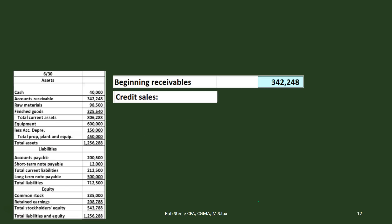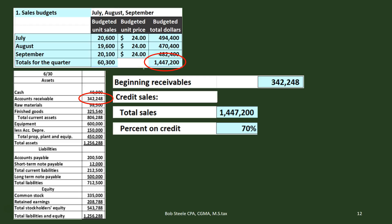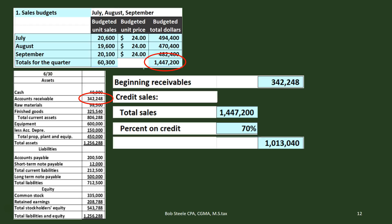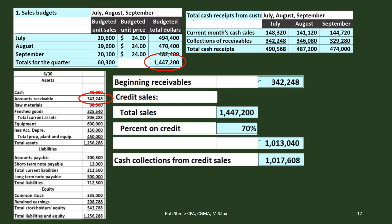We're going to take the beginning receivable, which is going to come from last period's accounts receivable — $342,248. That's where we start, and then we're going to add the credit sales. The problem said that we have $1,447,200 in sales from the sales budget, and 70% of that was going to be on account. Therefore those are sales that are going to increase accounts receivable. Then we have the cash collections from credit sales — we did that in the total cash receipts from customers calculation.